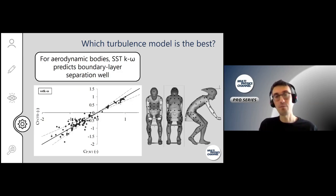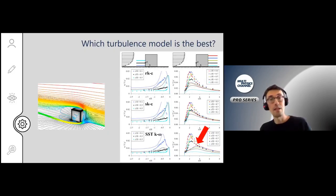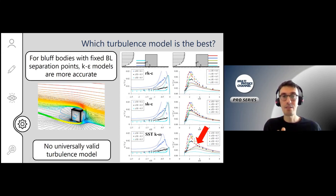Suppose you look at another problem like a building, a cubic building with fixed separation points. The corners of the building are where the flow separates—the story is different. You see that the k-omega model actually predicts a way too long or way too inaccurate recirculation zone in the back of the building or cube. In this case, when boundary layer separation prediction is not so critical, for bluff bodies, k-epsilon models are actually a little bit more accurate. So depending on the problem, the turbulence model accuracy changes. You have to be aware of that and test this yourself.